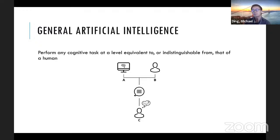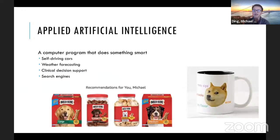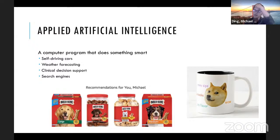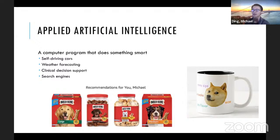Those are all examples of applied intelligences — an intelligence that operates within the boundaries of a specific problem it was designed and trained for, and cannot be used to solve a different problem without significant modification. For example, a self-driving car AI can't tell you what drugs to give a cancer patient. Applied intelligences contrast with general artificial intelligence, which can learn and solve problems regardless of field without constraints defined beforehand by humans. A general AI does not currently exist.